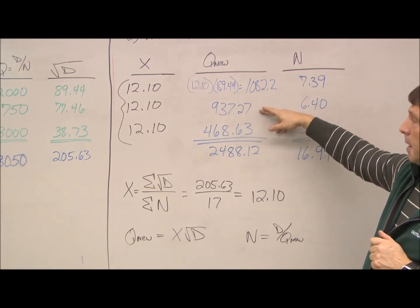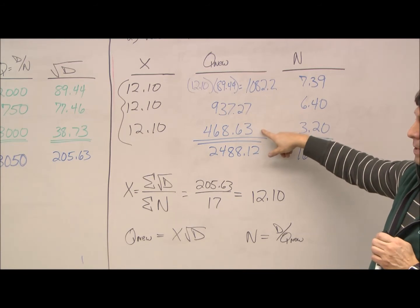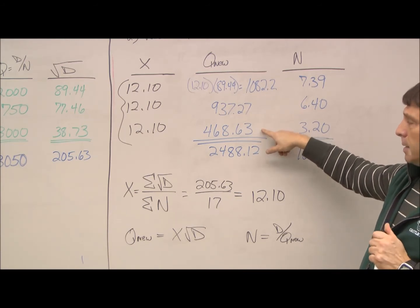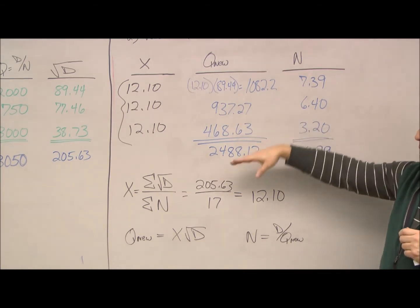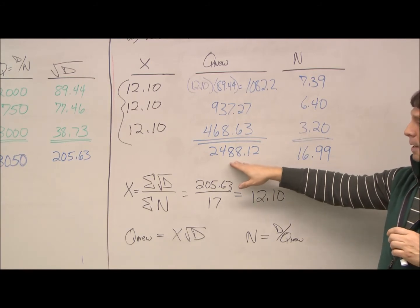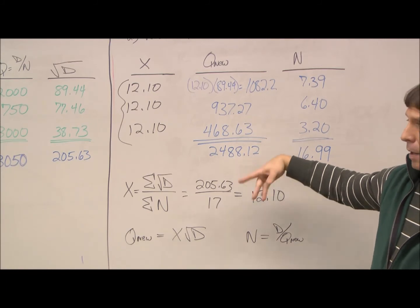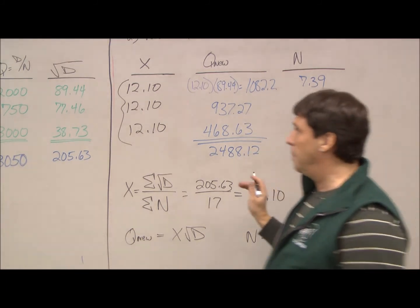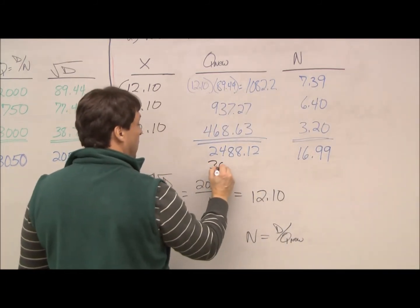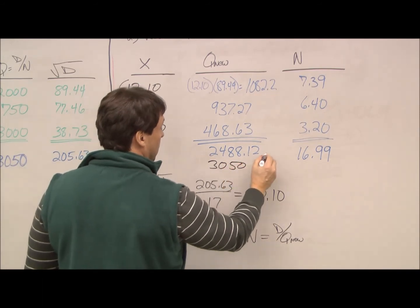Similarly, for B, it's 937. And for C, it's 468. If we sum those up, we can see our new Q is just under 2500. If you remember back from our other data, originally, we had this much inventory.